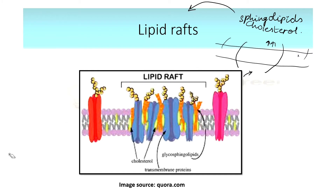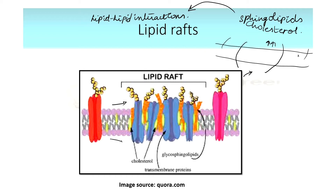Let's discuss a few key points about lipid rafts. Sphingolipids interact with cholesterol through lipid-lipid interactions. In this portion of the lipid rafts, our plasma membrane is very thick — there are a lot of sphingolipids and cholesterol concentrated here.